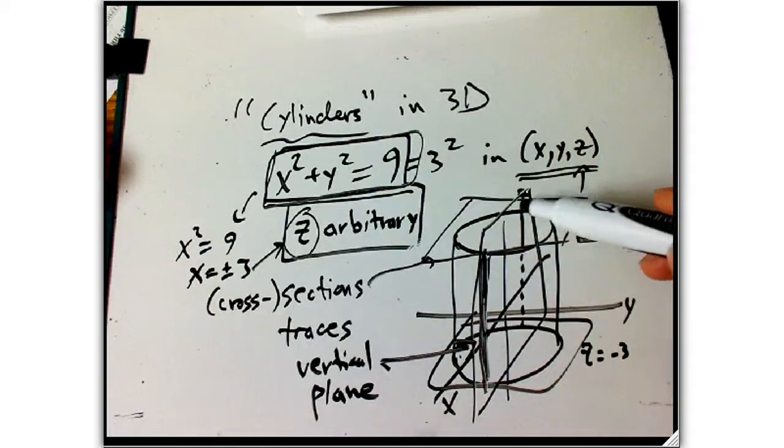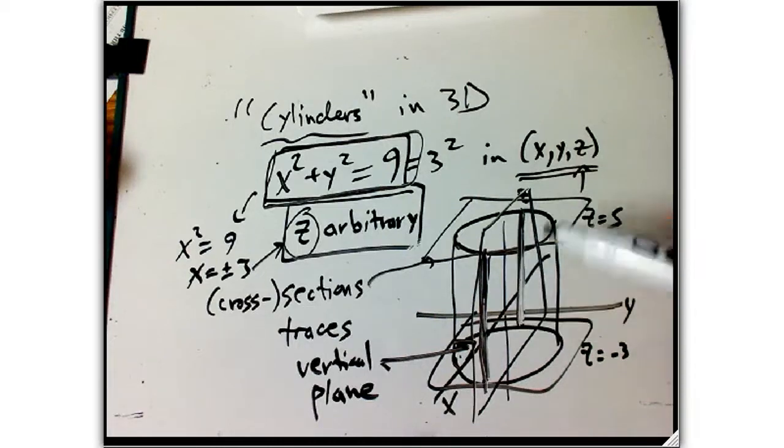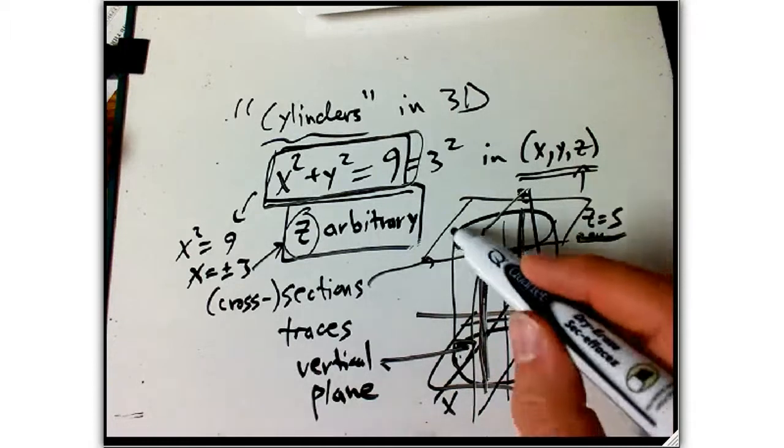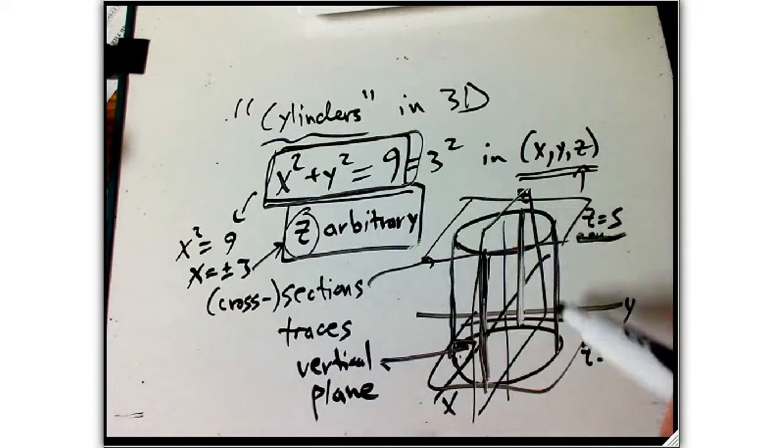And then here's the backwards part, the backwards line, the line at the back, where z is anything, and y is 0, and x is minus 3. And similarly, the left and right sides are where x is equal to 0, and you get y equals plus or minus 3.